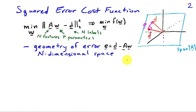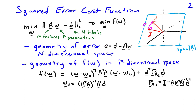In finding the solution for w, we've looked at the geometry of the error — e being the difference between d and Aw. We've shown that the error has to be orthogonal to the span of the columns of A. This geometry occurs in n-dimensional space because we're looking at the geometry of the n-dimensional error e. What we're going to do in this video is focus on the geometry of f of w, viewing the cost function f in terms of the p-dimensional vector w.